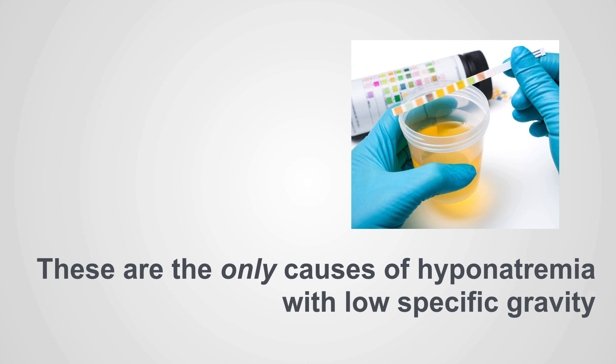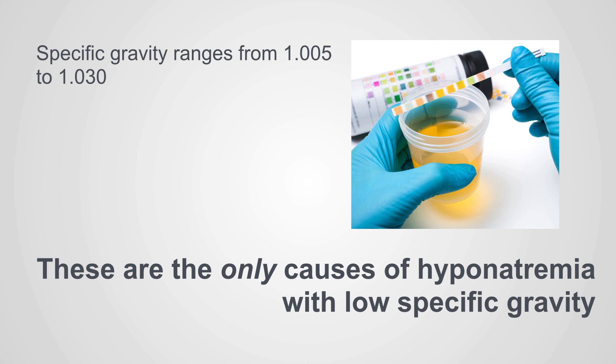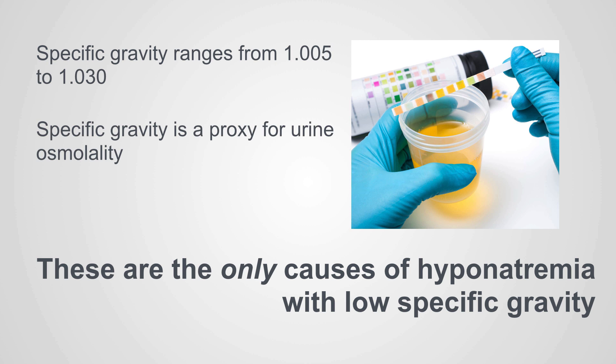Specific gravity is measured on all routine urinalysis dipsticks. It ranges from about 1.005 to 1.030 and is a measurement of the density of urine — the higher the density, the more concentrated the urine. It's a proxy for urine osmolality and a great way to assess what the kidney thinks the patient's volume status is. If a patient is making concentrated urine, that's a strong proxy for volume depletion.